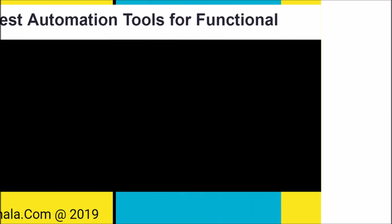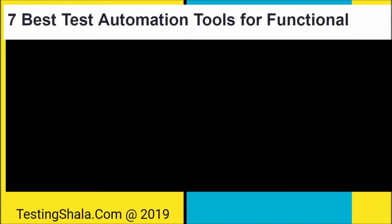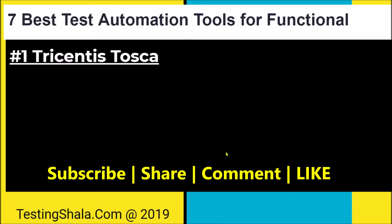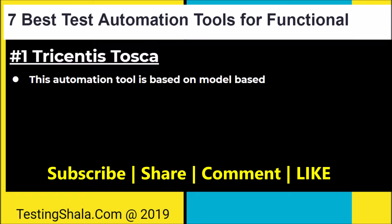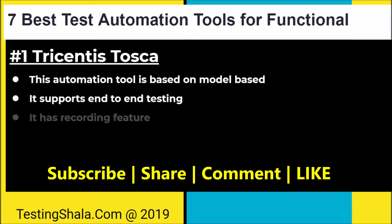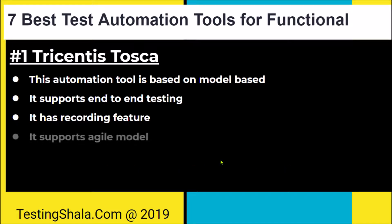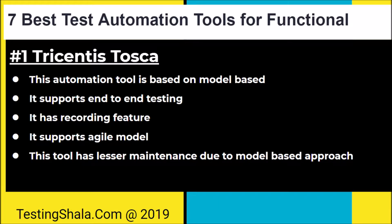Let's move on to understand what are those seven important test automation tools from a functional testing perspective. The first automation tool is Tricentis Tosca. This automation tool is based on a model-based approach and supports end-to-end testing. It also has a recording feature, supports agile methodology, and because it uses a model-based approach, maintenance is lesser compared to other functional automation tools.